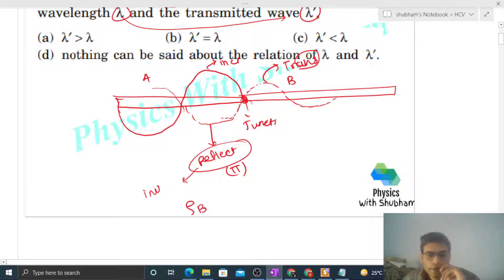Because jab wave rare medium se denser medium pe jata hai, us time pe jo reflected wave hai wo inverted ho jata hai, right? So let's talk in terms of medium. Let's say yeh jo string A hai, that is your medium A, and jo string B hai, that is your medium B.